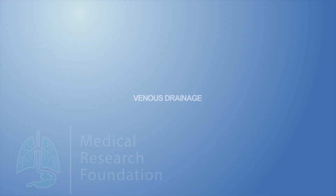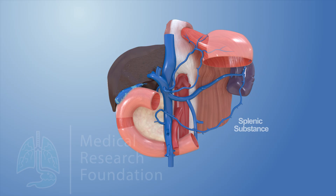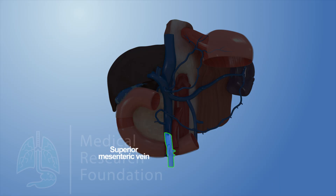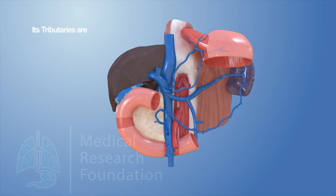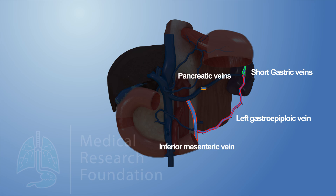The venous blood from the spleen is drained by the splenic vein, which is formed at the hilum by the union of five or more tributaries emerging from the splenic substance. The splenic vein runs a straight course from left to right behind the body of the pancreas. Behind the neck of the pancreas, it joins the superior mesenteric vein to form the portal vein. Its tributaries are the short gastric veins, left gastroepiploic vein, pancreatic veins, and inferior mesenteric vein.